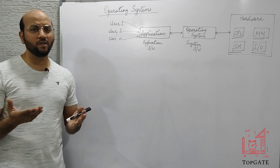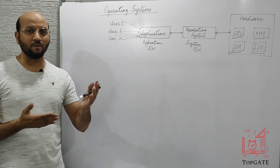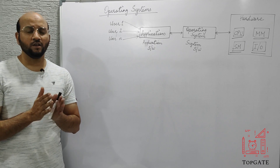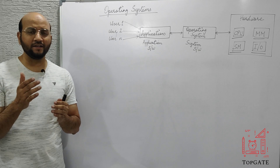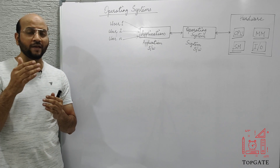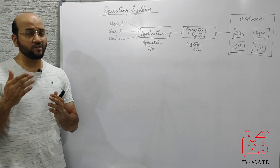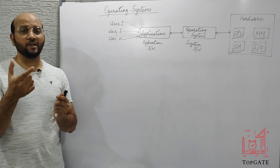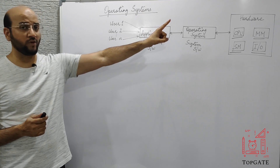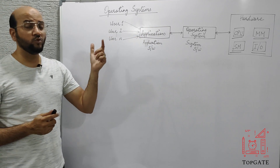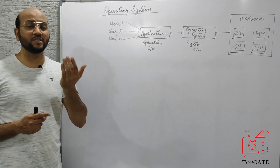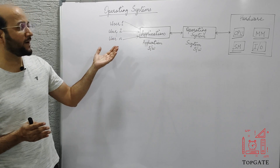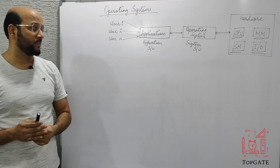The most important functionality of the operating system is that it provides an interface between the user and the hardware. This interface can either be a graphical user interface or it can be a command-based user interface. If we go back to the early 90s, we used Microsoft Disk Operating System — MS-DOS. This MS-DOS was a command-based operating system. That is, if the user wants to interact with the hardware, the user has to interact with the help of issuing some commands. So for everything, we have a command available that can be used to interact with the actual hardware of the machine.